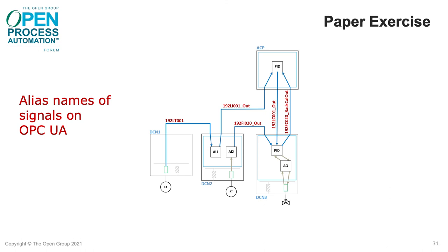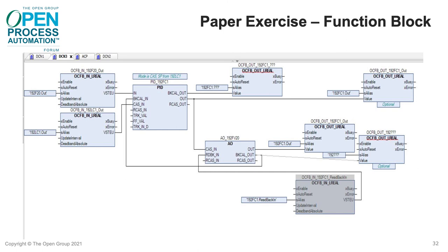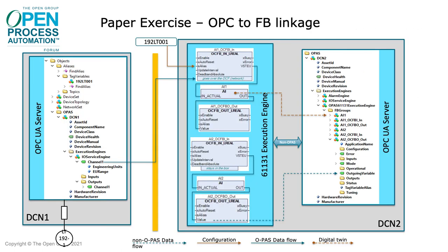We show how process values are communicated between control nodes via OCF, giving each signal an alias name that can be looked up in GDS to find its physical location. Here is a subsection of the function block application to control this process, showing OCFB blocks to communicate between control nodes and a PID block to compute the control action. This slide shows how data within the various function blocks is mapped into the OPC server and the OPAS information model — the red line shows the representation of the execution engine running the function blocks, the purple is the instance of an OCFB block named AI2_OCFB0_out, and the yellow shows one of the parameters within that block being mapped to the outgoing variable OPC item.